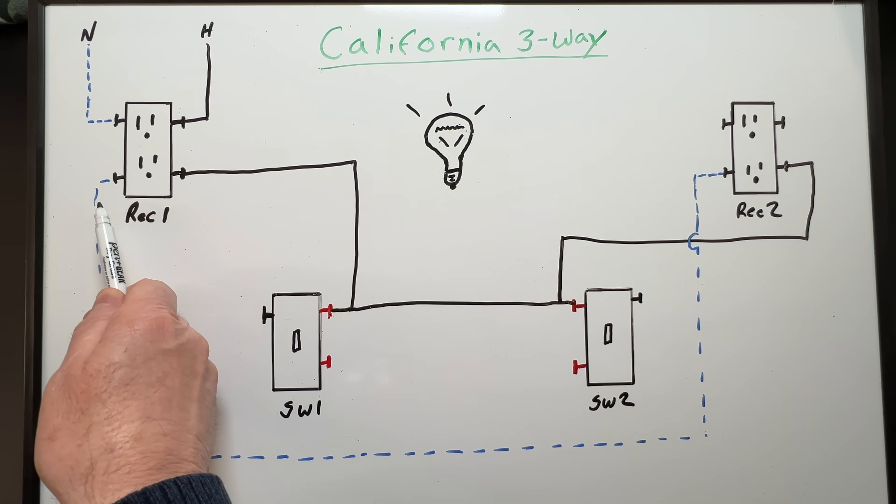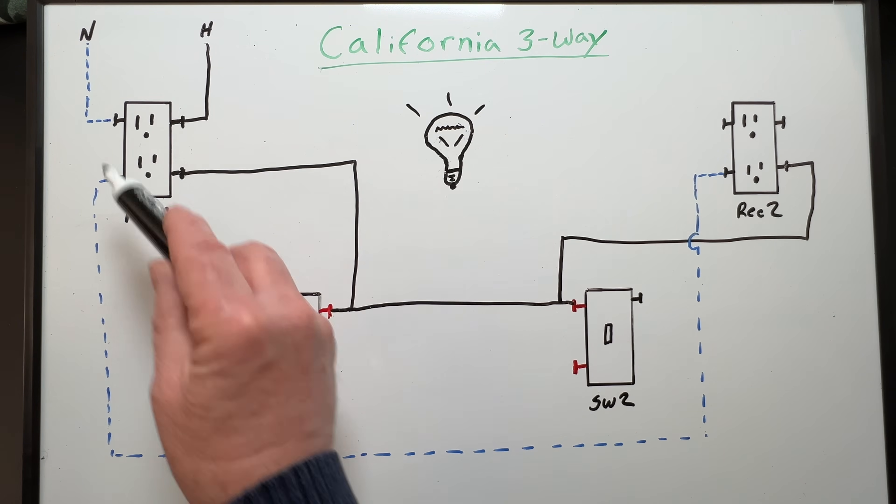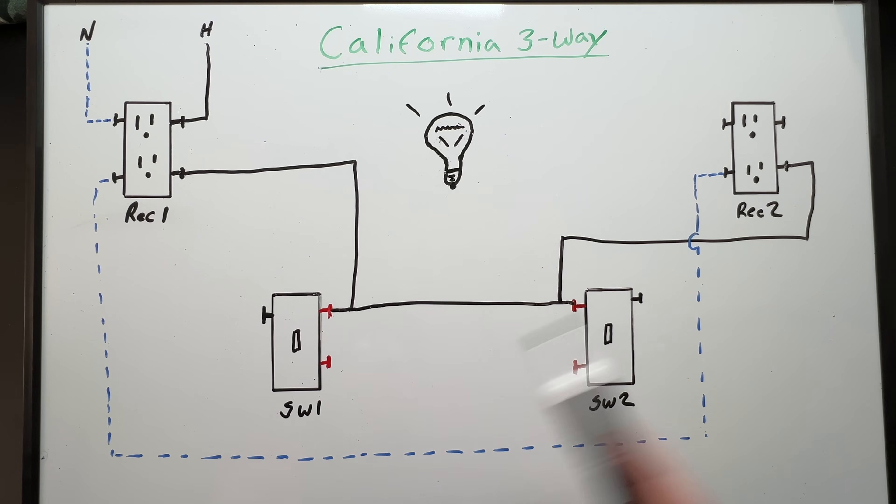Our white neutral wire from receptacle one will bypass our switches altogether and go directly to receptacle two. We now have a complete circuit path from receptacle one all the way over to receptacle two. Our line power comes from receptacle one goes down to switch one across to switch two and up to the receptacle. Then our neutral return returns current back to the source. So receptacle two will now have power regardless of the position of our three-way switches. And our receptacle circuit can continue on to other lights and receptacles as well.